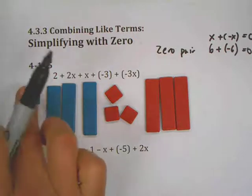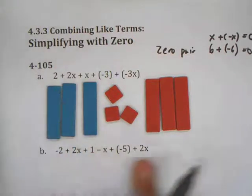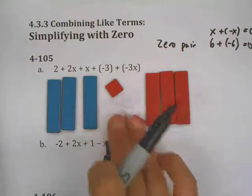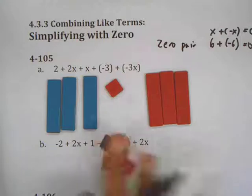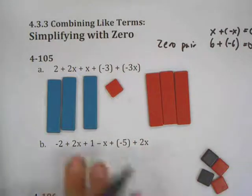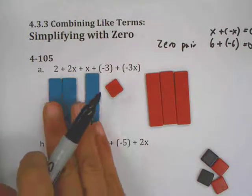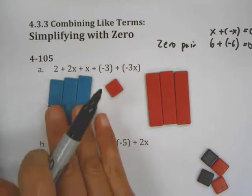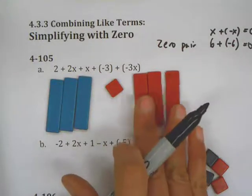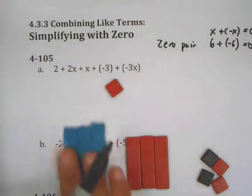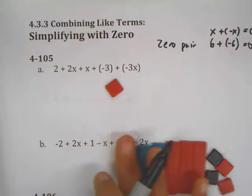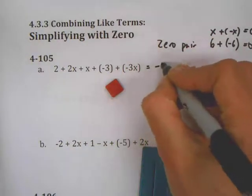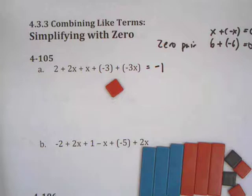We're looking for zero pairs. Here's a plus two and a minus two — that's a zero pair, so that is removed. Then we have three positive x's: 2x plus x is 3x, and a plus negative 3x. These are opposites, so those cancel — those are zero pairs. What we're left with is negative one.